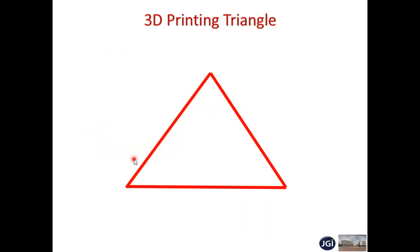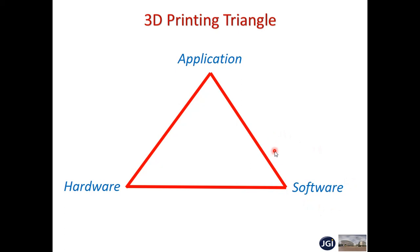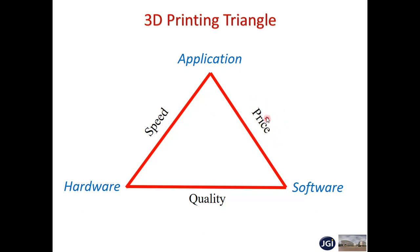This is called the 3D printing triangle — how the cost and other factors of different 3D printers increase. This depends on three parameters: the application you are using, hardware, and software. For example, if using a polymer 3D printer that is SLA, the cost of the laser will be 8 to 10,000, but if I go for metal, the cost will go to 25 lakhs. This also depends on the speed and the quality — if you want better quality, the speed of printing should be less and the price to print becomes very high.